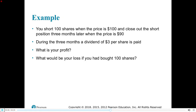You short 100 shares at $100 — just so you see how it works. This is more appropriate for an investments class, but here they use a simple stock example just so you see how short selling works. You close out the position three months later for $90. During the three months, a dividend of $3 per share is paid. What is your profit? It looks like you made $10 on the short sale because you sold it at $100 and bought it back at $90.